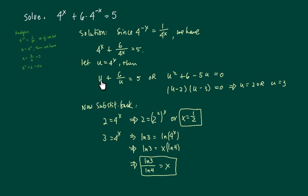Substitution leads us to u plus 6 over u equal to 5. Multiply by u on both sides - this is just an easy quadratic equation. I choose to factor: u minus 2 times u minus 3 equal to 0, which gives u equal to 2 or 3.